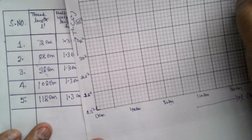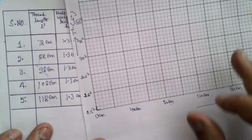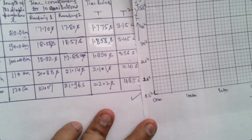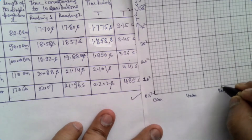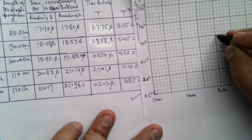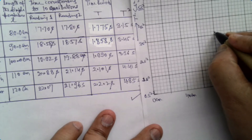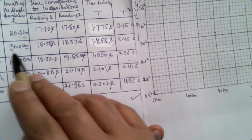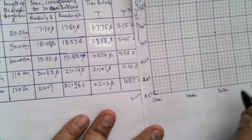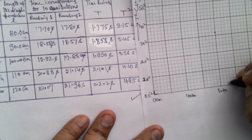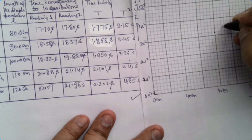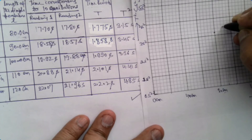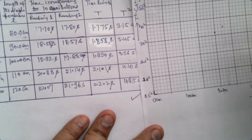Plotting the first point: L = 80 cm, T² = 3.15 s². This falls between 3.0 and 3.2 on the y-axis. The second point: L = 90 cm, T² = 3.45 s². This falls between 3.4 and 3.6 on the y-axis, closer to 3.4. Both points are marked on the graph.